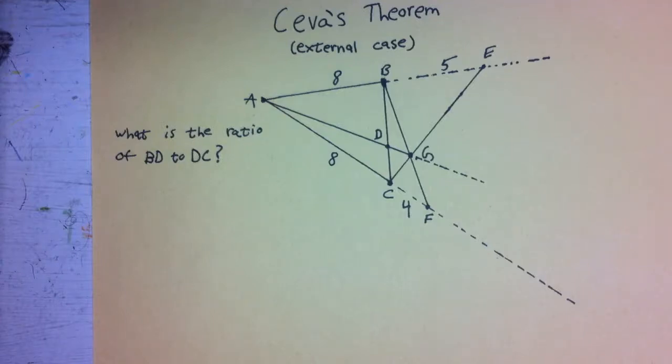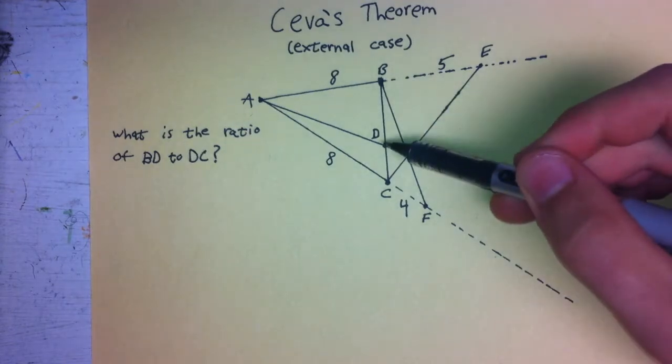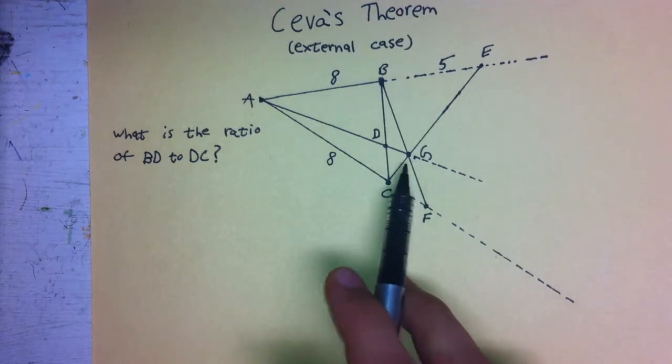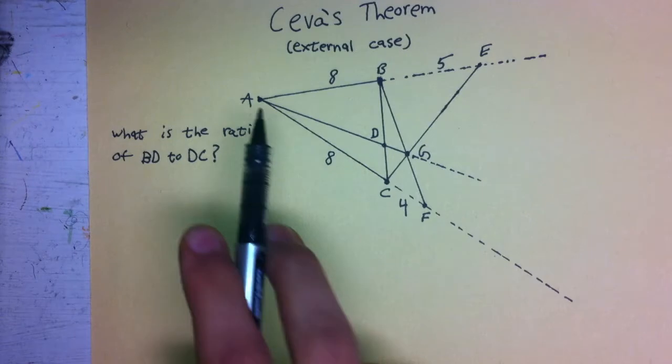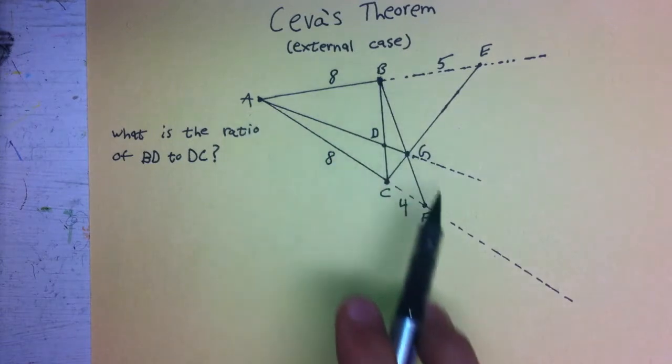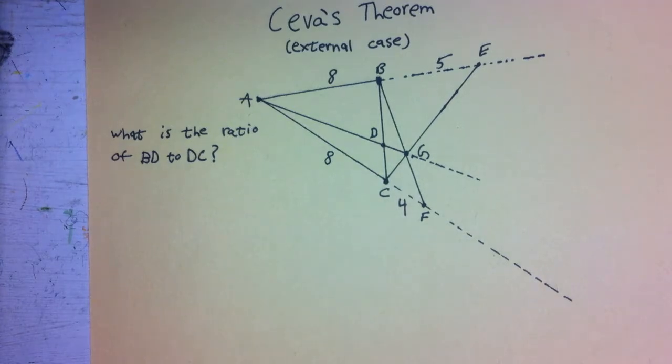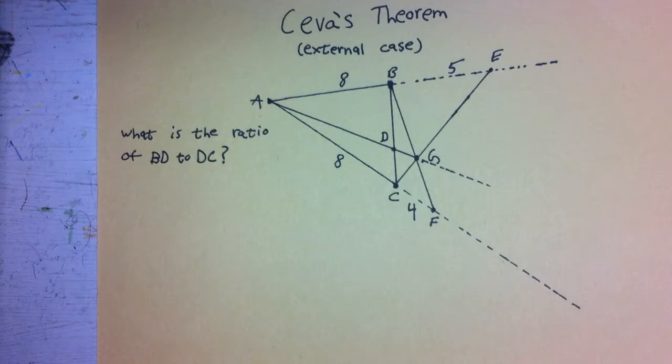This problem asks us to consider the following diagram and determine the ratio of BD to DC. Although it's not directly stated, because of the way the diagram is drawn, we can assume that lines AD, BF, and CE all intersect at the same point, point G, and therefore that all three of those lines are concurrent, which allows us to use Ceva's theorem in regards to triangle ABC.